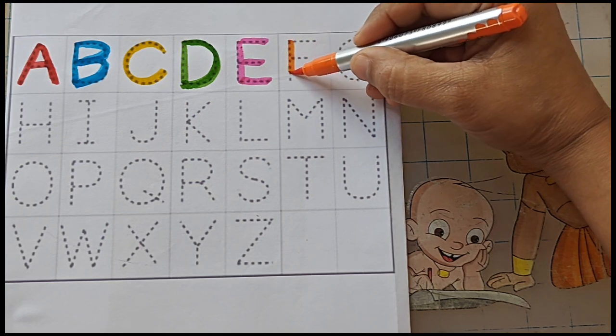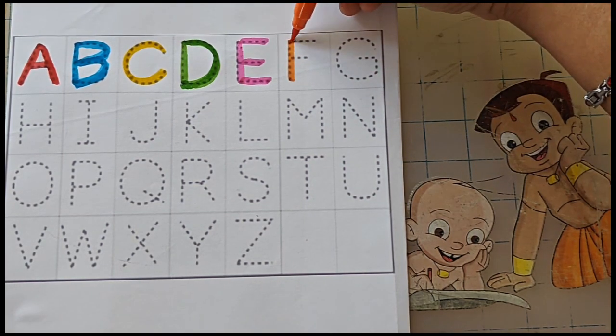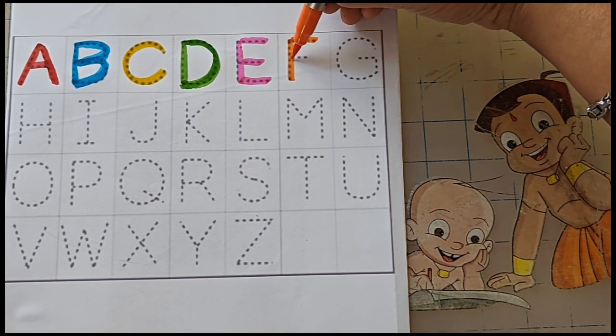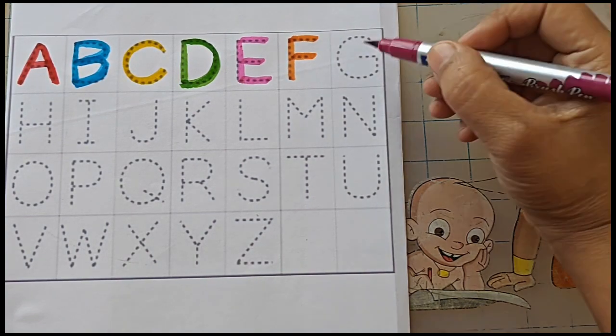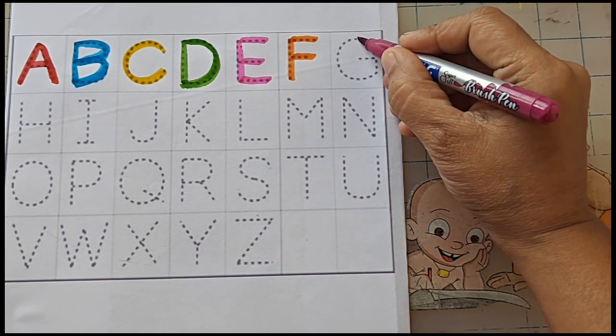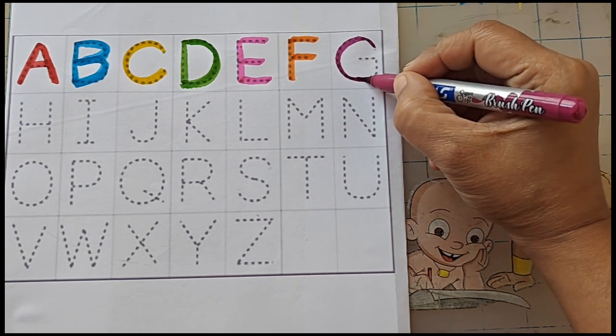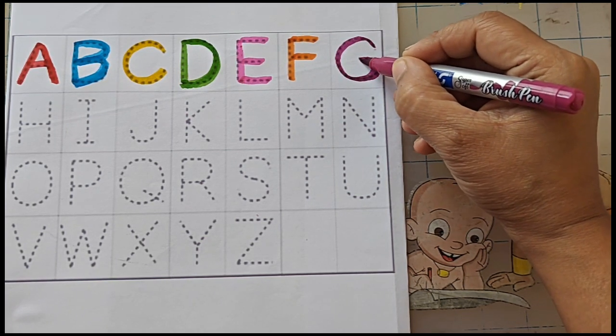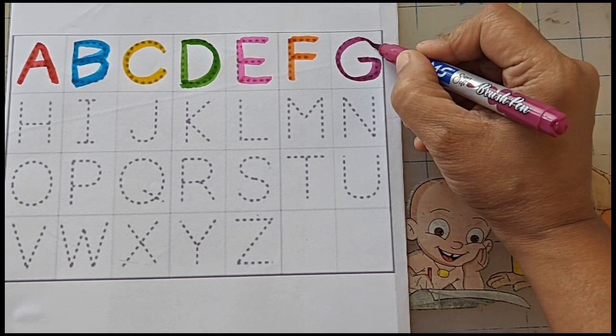F, F for frog. F, F for fan. D, D for gun. D, D for goat.